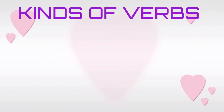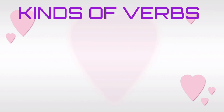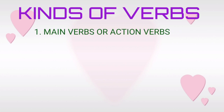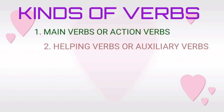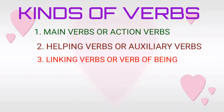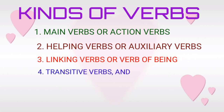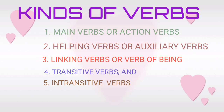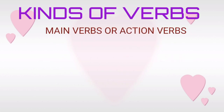Let us learn what are the kinds of verbs. The kinds of verbs are listed below. First, main verbs or action verbs. Second, helping verbs. Third, linking verbs. Fourth, transitive verbs. And fifth, intransitive verbs.